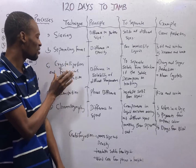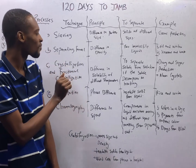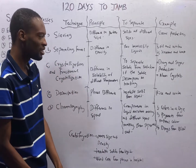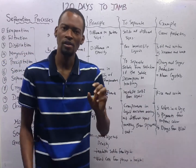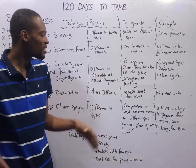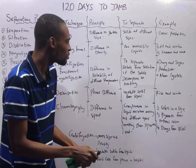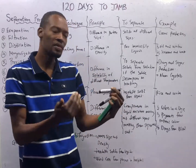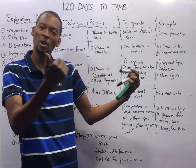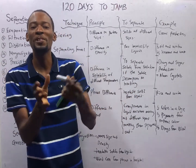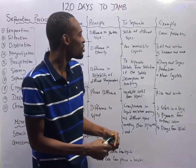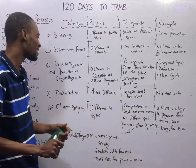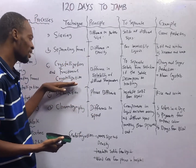Crystallization and fractional crystallization are used when you have different solubility at different temperatures. It is used to separate mixtures that have a difference in solubility at different temperatures, meaning one constituent of the mixture is more soluble than the other. It is also used to separate solute from solution if the solute decomposes from heating — this is the key difference between evaporation and crystallization.